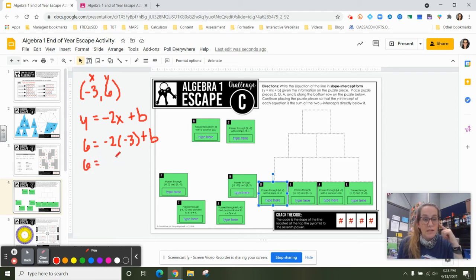Right? So I'm going to simplify a little bit. Negative 2 times 3 is positive 6. I'm going to start solving. So doing the opposite or my inverse, 6 minus 6 is 0. 6 minus 6 is 0. And, hey, 0 plus b is just b.